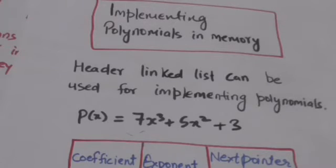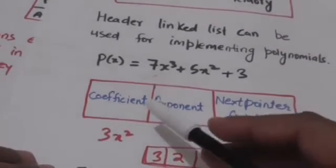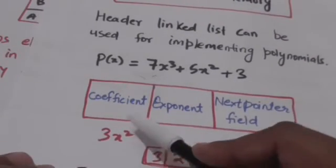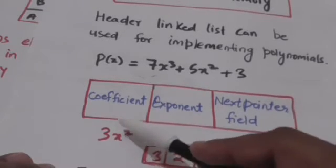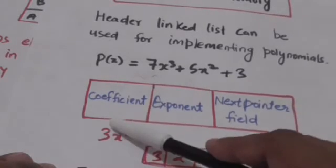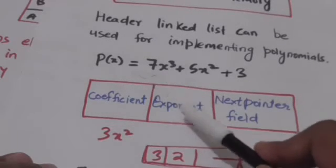Now how does a node of the linked list represent a term of the polynomial? For this, the information part of a node is divided into two parts. One part represents the coefficient and another part represents the exponent.